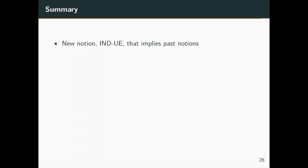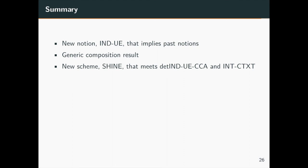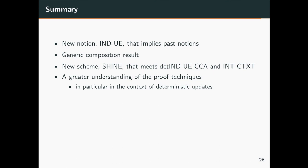To conclude, we introduce a new security notion IND-UE for UE schemes, and prove it implies prior notions and is strictly stronger. We demonstrate the generic composition result for UE schemes, yielding a diagram showing relations among all existing security notions. Our second major contribution is SHINE, a new fast updatable encryption scheme achieving both CCA and CTXT security. We further advance understanding of schemes with deterministic update mechanisms and show how to use the firewall technique to prove security for UE.